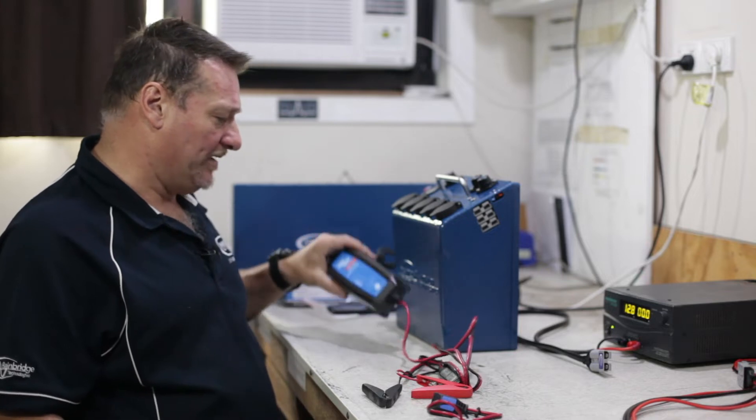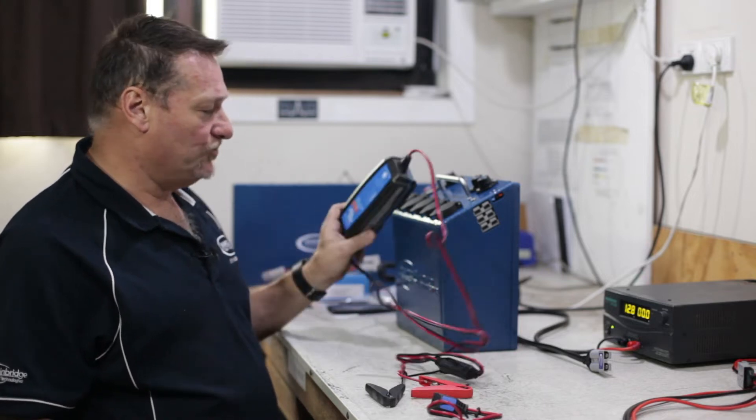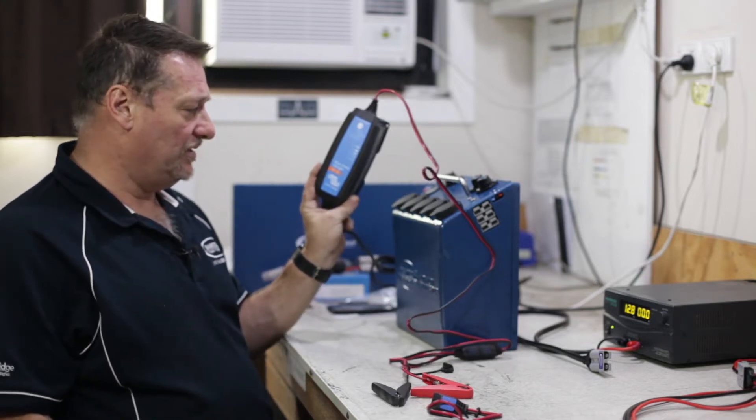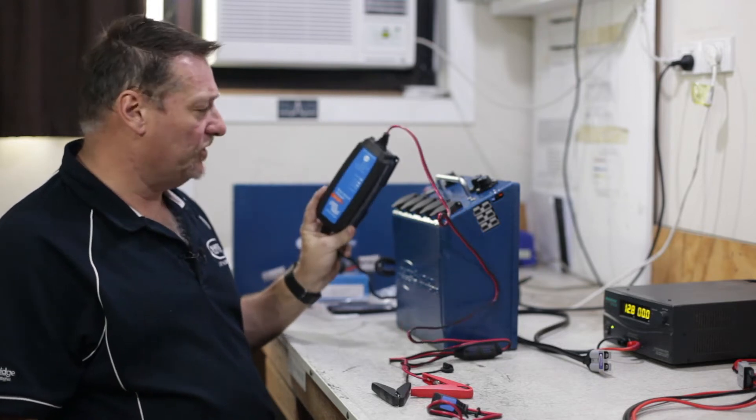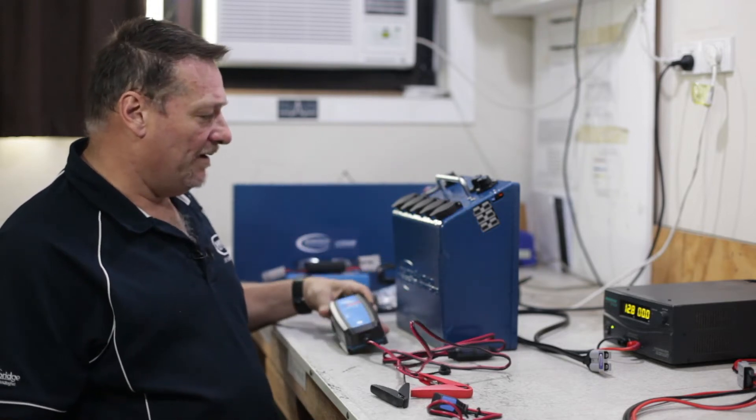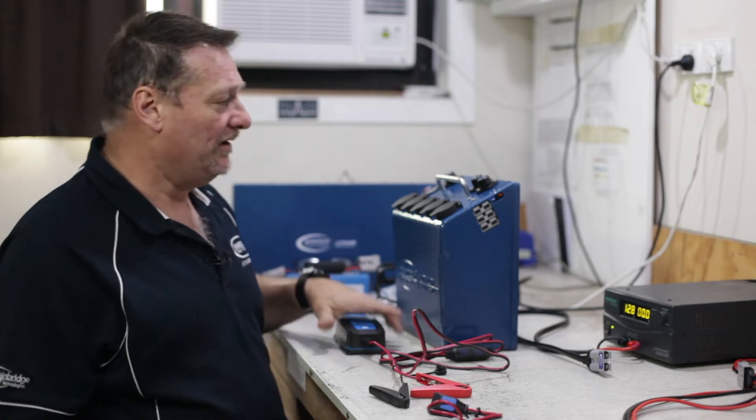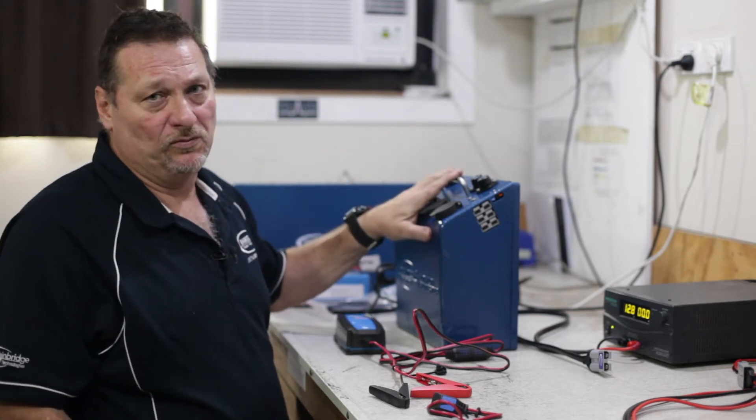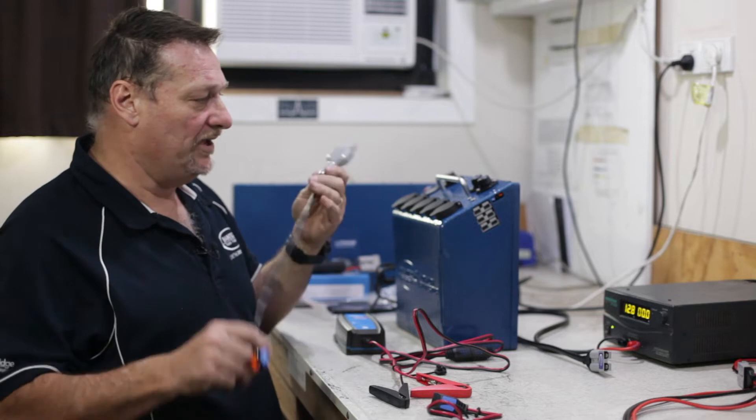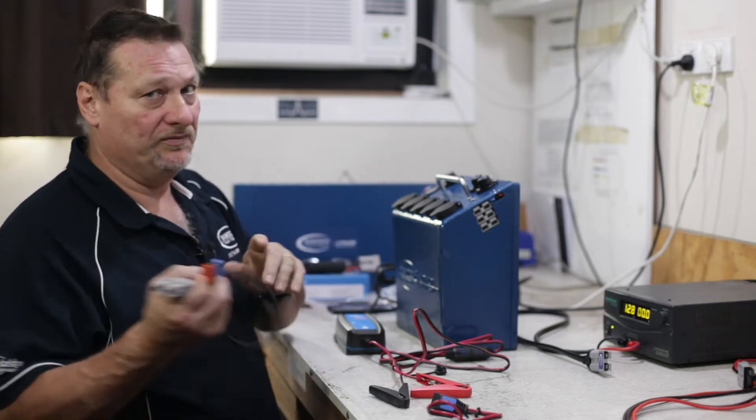At the same time we packaged it with these Victron 5 amp lithium chargers which I'll show you how to set up so you can charge at home before you go out. Then whilst on the road for a long weekend you can have the dedicated 20 amp or plug it into your cigarette lighter.